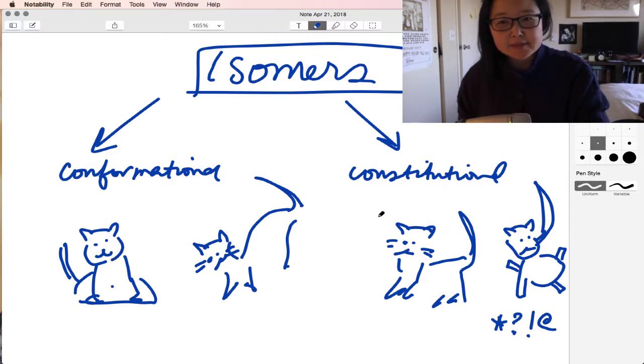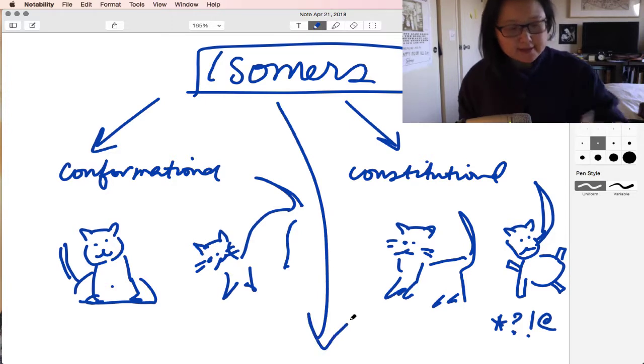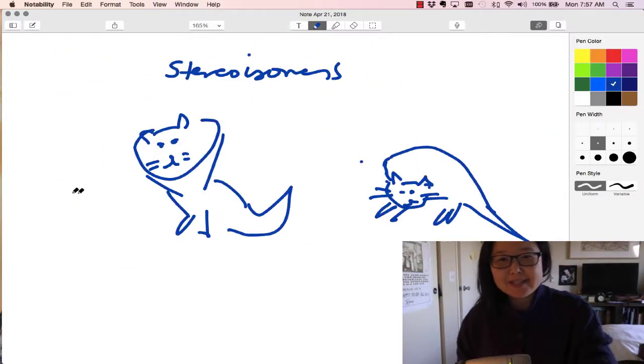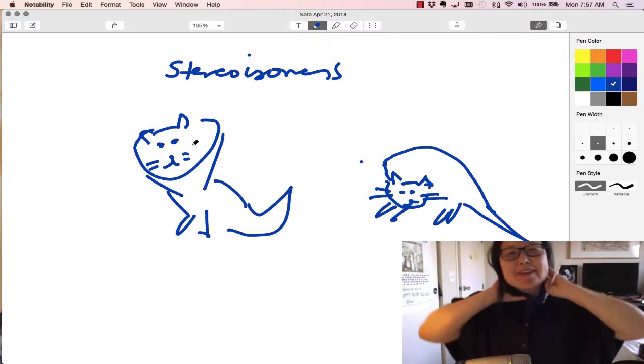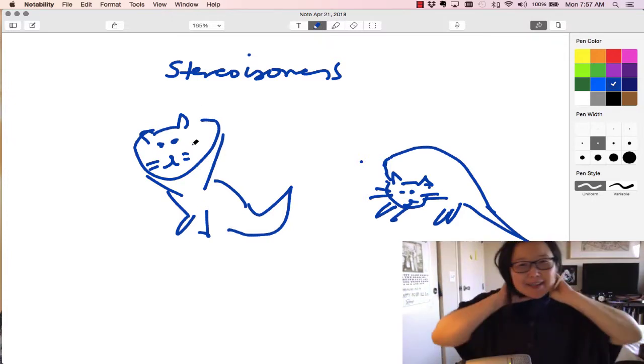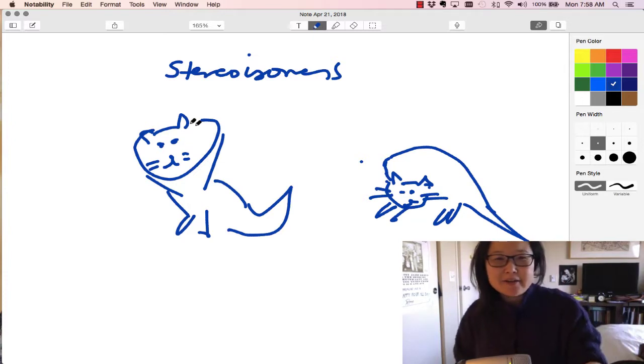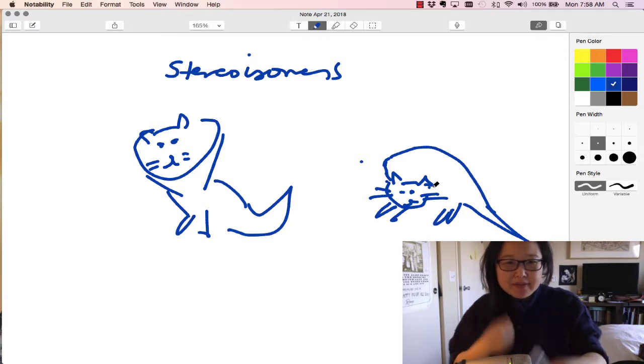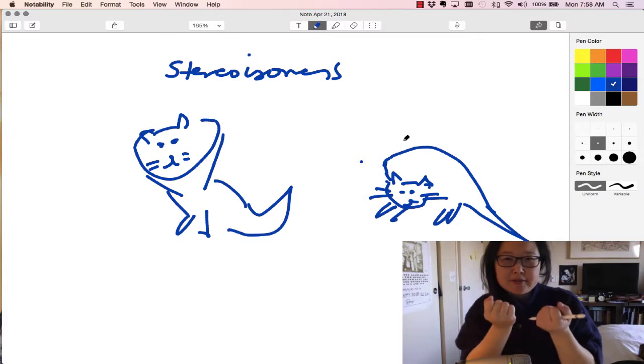Over here, constitutional isomers have different connectivity, so they are different molecules. And then, if we wanted to add stereoisomers, then I might have my cat, Ginger, in a position where she has a cone around her neck, and she can't rotate, and her stereoisomer would be a different molecule that would maybe have a different 3D shape. Even though the connectivity's all the same,